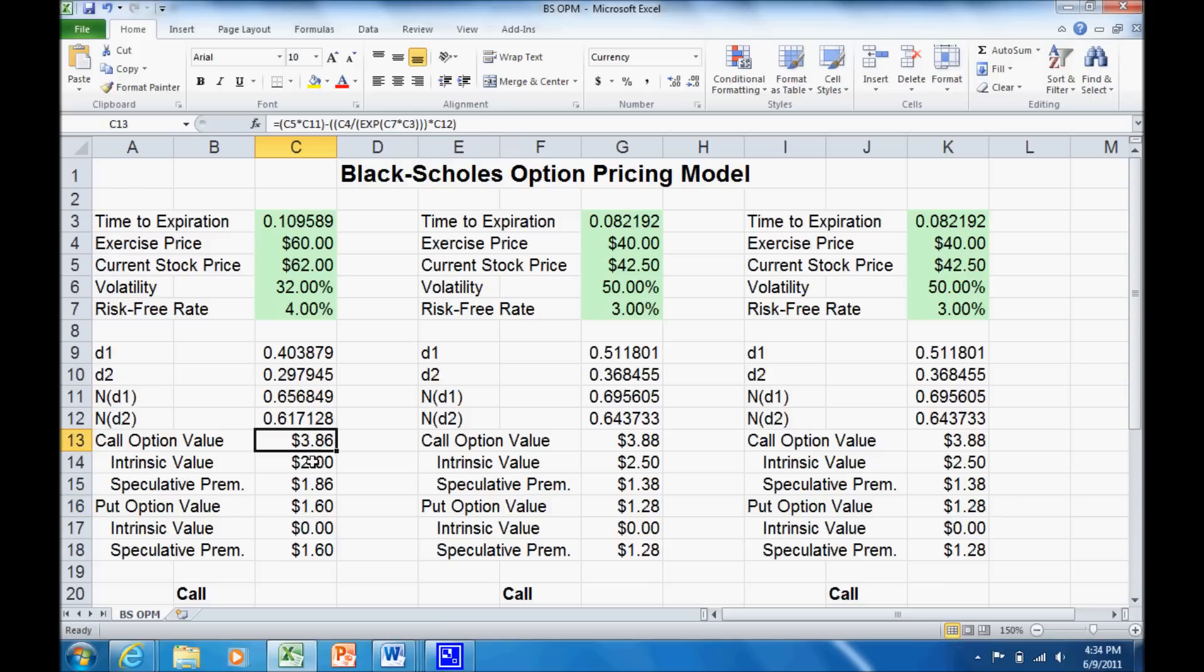Our call option has a value of $3.86. We also break it down into the intrinsic value and speculative premium. Since it's a call option and we can buy that $62 stock for only $60, it has an intrinsic value of $2. The remaining $1.86 is speculative premium.